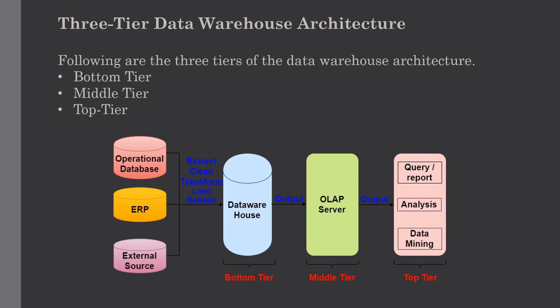There are two ways to implement the OLAP servers. The first is Relational OLAP, or ROLAP, which is an extended relational database management system. ROLAP maps the operations on multi-dimensional data to standard relational operations. The second is Multi-dimensional OLAP, or MOLAP, which directly implements the multi-dimensional data and operations.